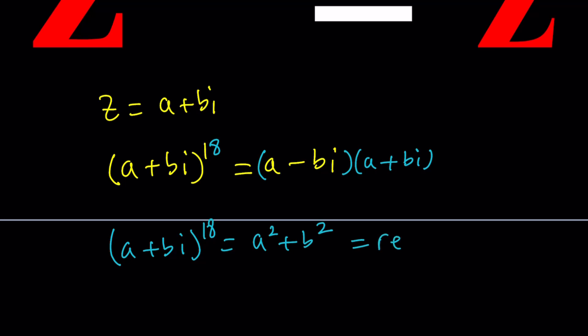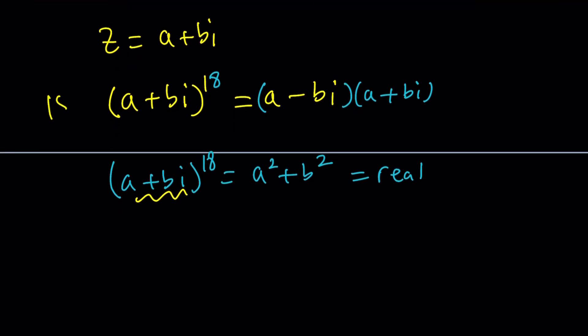So A plus B I is a very special number. And by the way, this 18 could be a much higher number like 2000 something, depending on the year. But basically what happens is this is a special complex number whose 18th power is real. Not all numbers are going to satisfy it. There are certain numbers that do. But let's go ahead and take a look at our second method.